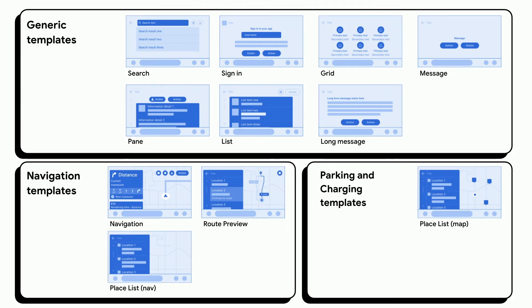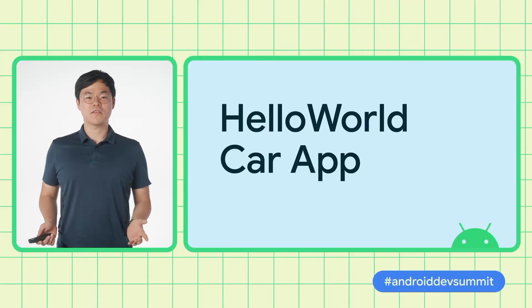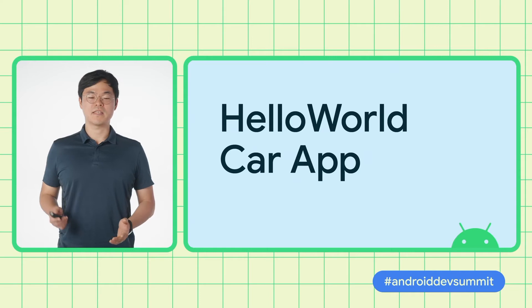Please do let us know what templates and categories you'd like to see in the future. Now, Jay will walk you through the code and show you an example of a simple car app. In this section, we will learn about the Car App Library by building a simple Hello World app.